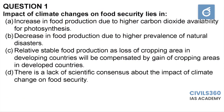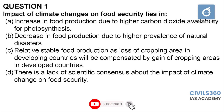First question: the impact of climate change on food security. Options are: increase in food production due to higher carbon dioxide availability for photosynthesis; decrease in food production due to higher prevalence of natural disasters; relatively stable food production as loss of cropping area in developing countries will be compensated by gains in developed countries; or lack of scientific consensus about the impact.